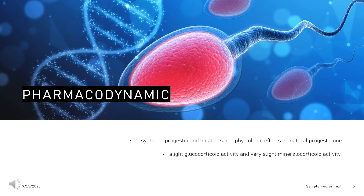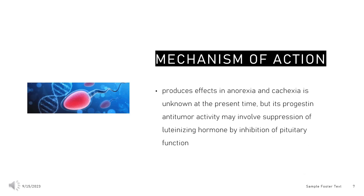The precise mechanism of Megastrol's anti-anorexic and anti-cachectic effects is unknown. Initially developed as a contraceptive, it was first evaluated in breast cancer treatment in 1967. The precise mechanism by which Megastrol acetate produces effects in anorexia and cachexia is unknown, but its progestin anti-tumor activity may involve suppression of luteinizing hormone by inhibition of pituitary function. Studies suggest its weight gain effect is related to appetite stimulant or metabolic effects rather than glucocorticoid-like effects or edema production. It has also been suggested that Megastrol may alter metabolic pathways via interference with the production or action of mediators such as cachectin, a hormone that inhibits adipocyte lipogenic enzyme.